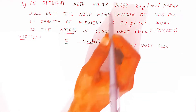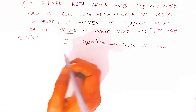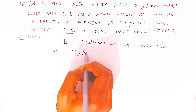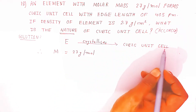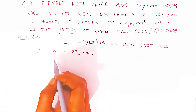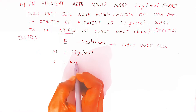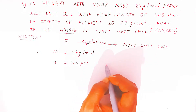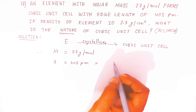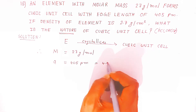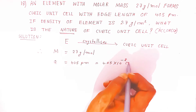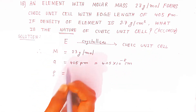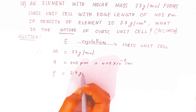The molar mass of the element is given as M = 27 g/mol. The side length of the cubic unit cell is given as a = 405 picometer. We need to convert this into centimeters by multiplying with 10 raised to minus 10, which gives 4.05 × 10⁻⁸ cm. The density (rho) of the element is given as 2.7 gram per centimeter cube.